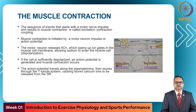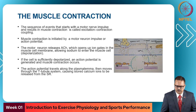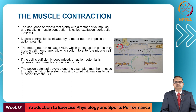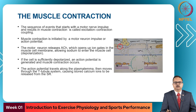The muscle contraction is initiated by a motor neuron impulse or action potential. At the level of the neuromuscular junction, the motor neuron releases ACh, which opens up the ion gates in the muscle cell membrane allowing sodium to enter the muscle cell — a process called depolarization. If the cell is sufficiently depolarized, an action potential is generated and muscle contraction will occur.